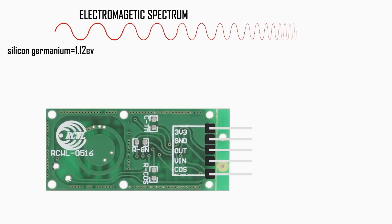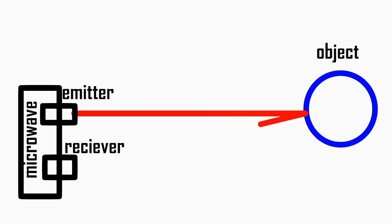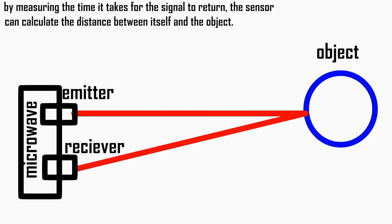Microwave sensors utilize the principle of sending out microwave signals and analyzing the reflected signal to detect objects and measure their distance. These sensors operate based on the Doppler effect, which involves changes in frequency and wavelength of a wave as perceived by a moving object relative to the source of the wave.